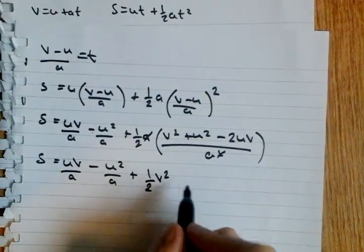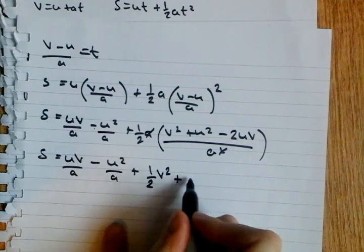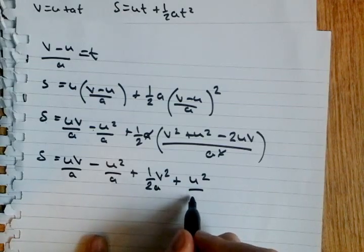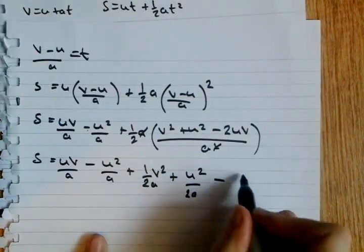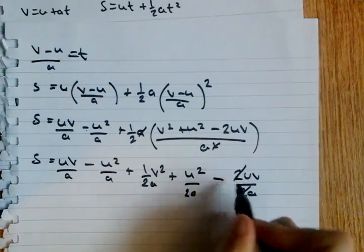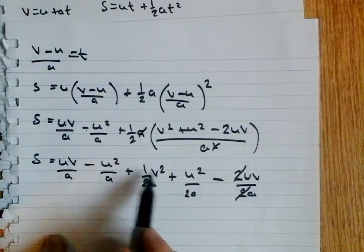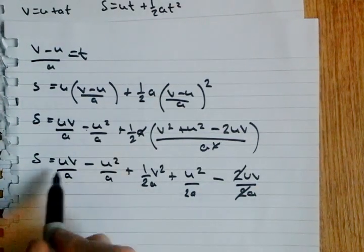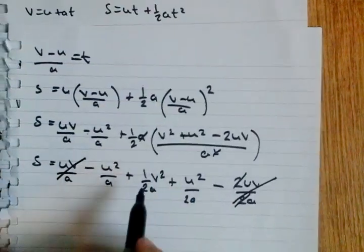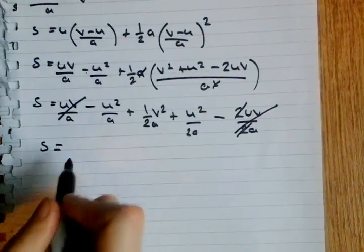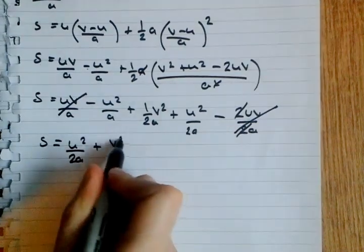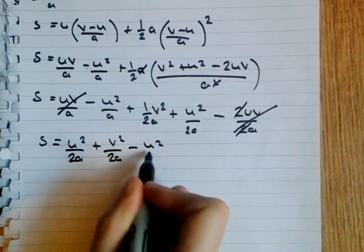Half V² plus U² over 2A minus 2UV over 2A. This cancels out with each other. Just imagine that V² where that one is. And then you've got UV over A minus UV over A. Goodbye. So, then we're left with S is equal to U² over 2A plus V² over 2A minus U² over A.